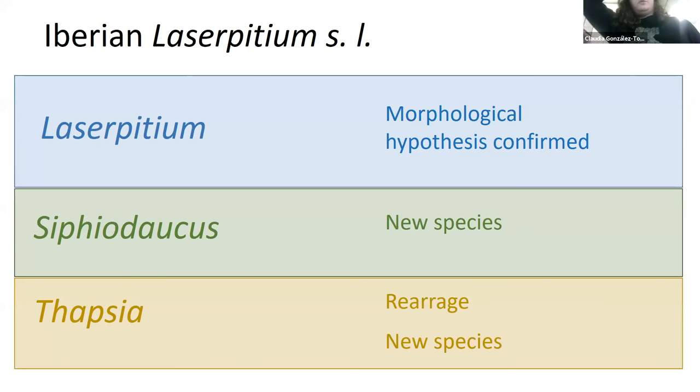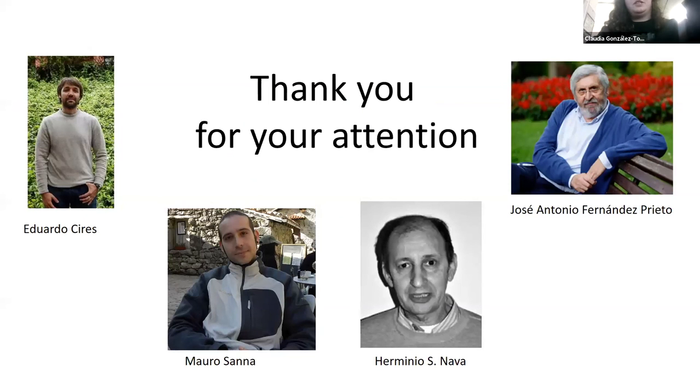To summarize what we have in the Iberian sensu lato, we have two species of Laserpitium, and we confirmed the morphological hypothesis. We have one new species of Siphidaucus, and regarding Thapsia, we have to rearrange two existing subspecies and we believe we have a third new species. So that will be it. This is the rest of the team. And thank you very much.